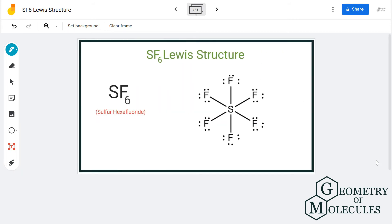To see if the octets of all the atoms are complete, we'll place all these valence electrons around fluorine atoms. So here, each fluorine atom has eight valence electrons. But now you might be wondering how come it is possible for sulfur to have more than eight electrons in its outer shell.